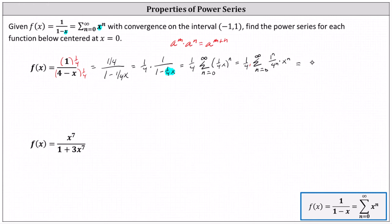The final power series is the sum from n equals zero to infinity of x to the power of n divided by four to the power of n plus one.